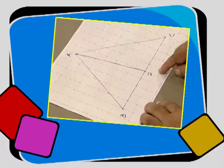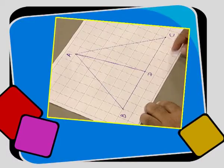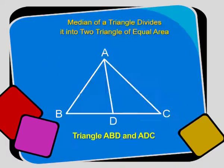Children, what do you observe? The median of a triangle divides it into two triangles, namely ABD and ADC.